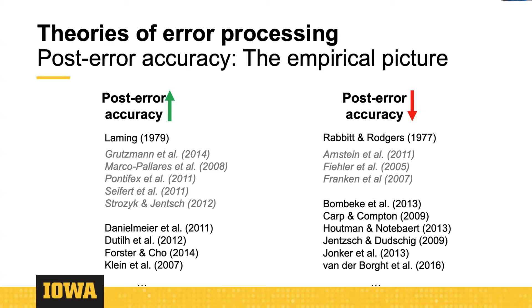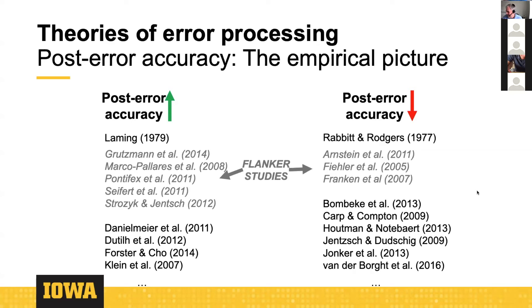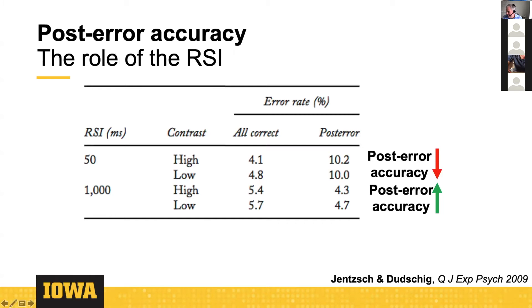Studies still find results on both sides of the equation with no coherent factor determining which side you come down on. For example, these studies are all flanker studies, so it's not as simple as the task type driving the difference. One really important aspect is the response-stimulus interval, going back to seminal work by Jentzsch and Dudschig, who reported that when the RSI is short, post-error accuracy decreases, and when the RSI is long, post-error accuracy increases.